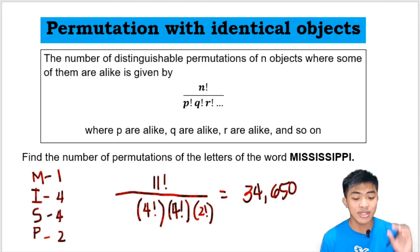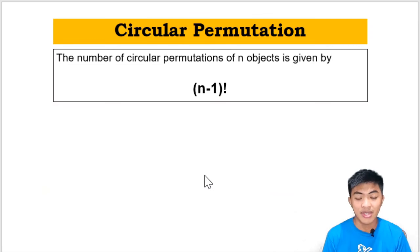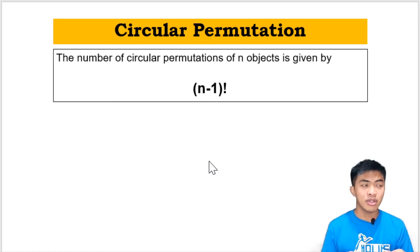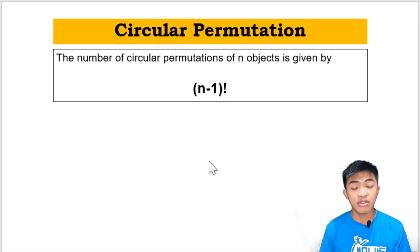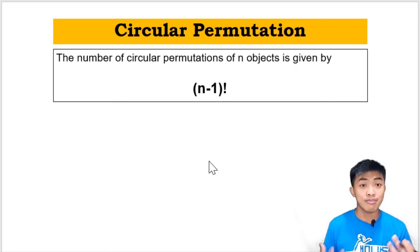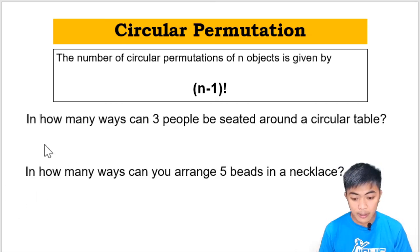Kapag binigyan kayo ng problem wherein may magkakapareho na letters or magkakapareho na objects, you use this formula. Don't forget yung nasa taas, yun yung kung ilan lahat yung items or objects. And then yung nasa baba, doon mo ilalagay yung bilang ng mga magkakaparehong letters. We have another one: circular permutation. The number of circular permutations of n objects is given by this simple formula: n minus 1, the quantity factorial. Dito usually magbibigay sila ng problem kung saan you're going to ask the number of arrangements if you're going to arrange people in a round table or if you're going to arrange beads in a necklace and others.